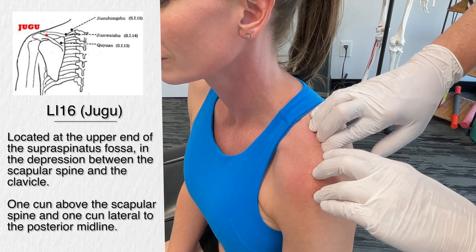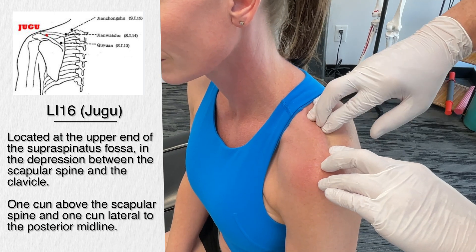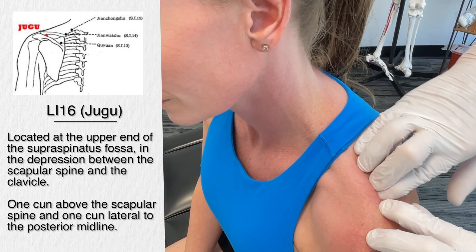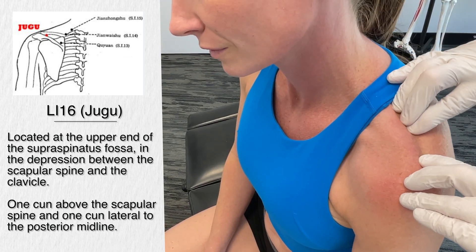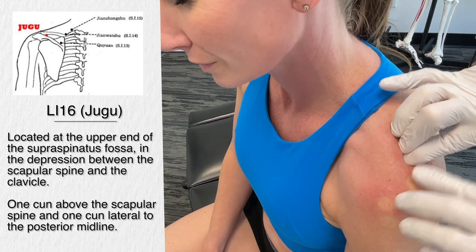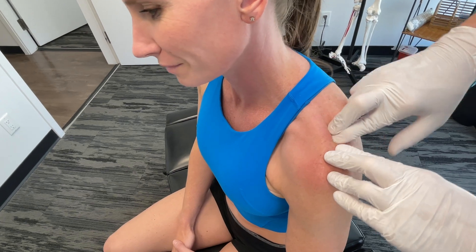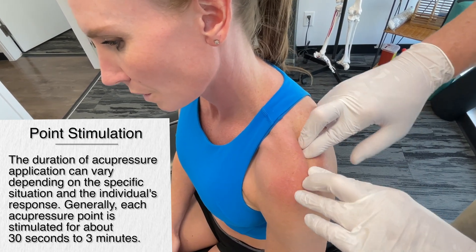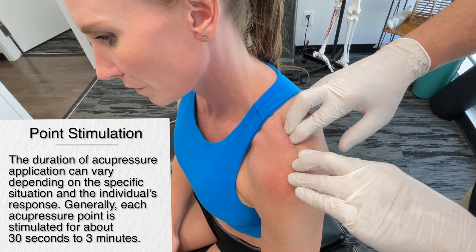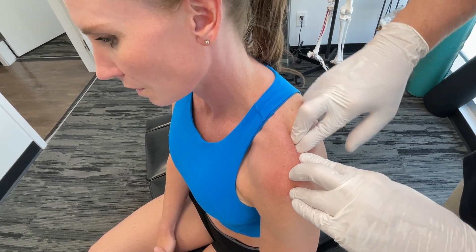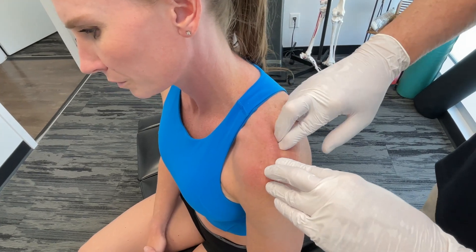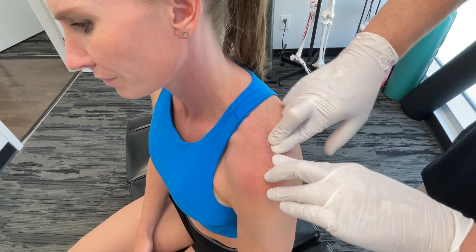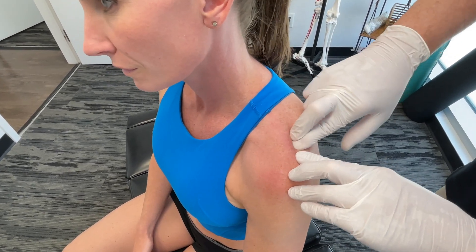Now large intestine 16. This is right in the lateral portion — the upper end of the supraspinous fossa — in the depression between the scapular spine and the clavicle. Follow the supraspinous fossa right over the clavicle. We stimulate for 30 seconds to a minute. We would combine this work with fascial releases in MSR protocols and also joint manipulation. The tenderness drops significantly — much better.